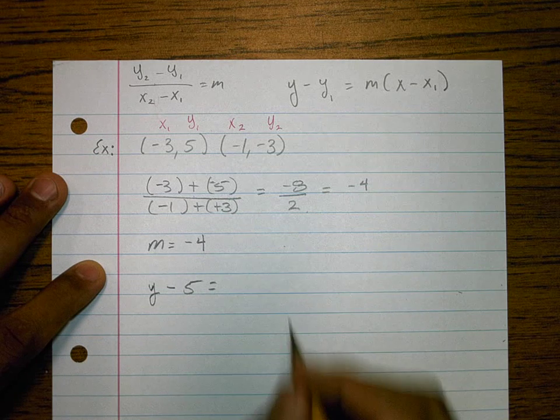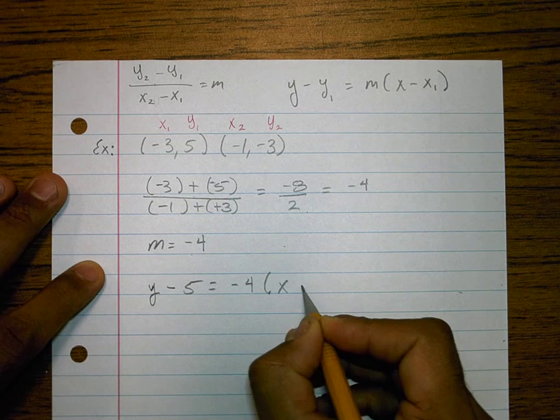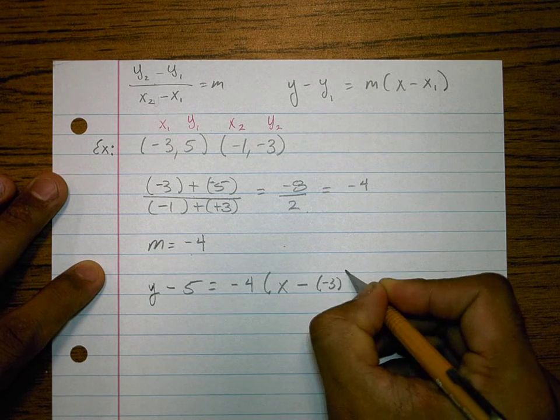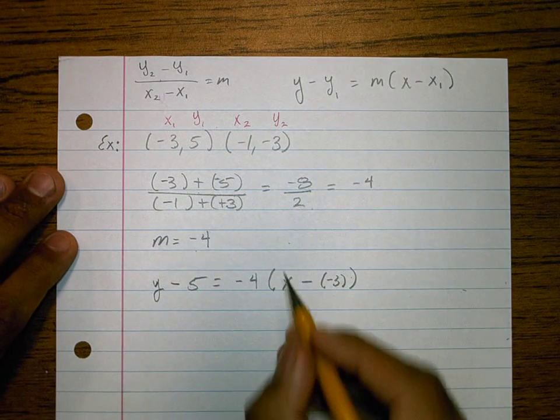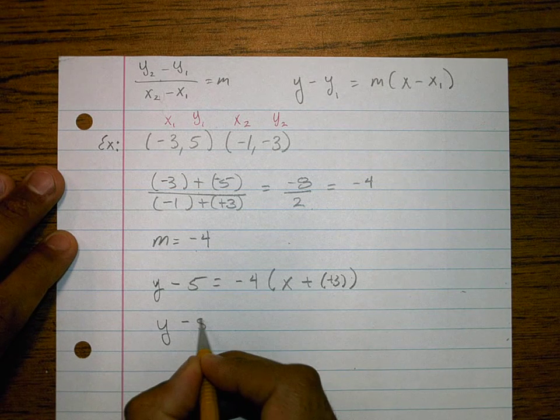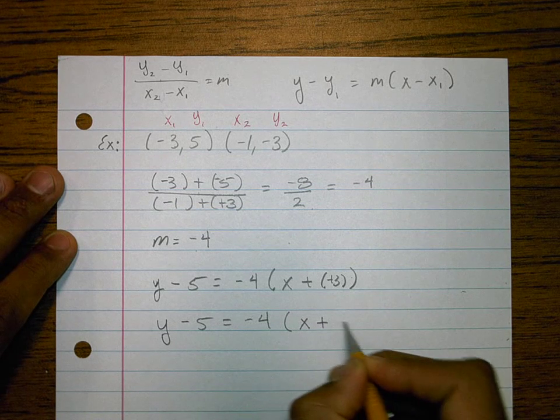Equals the slope, which I just figured out was negative 4, times x minus x1. In this case, it is negative 3. So I'll add the opposite and clean that up a little bit. And I'll say y minus 5 equals negative 4 times x plus 3.